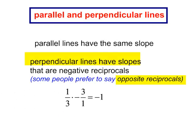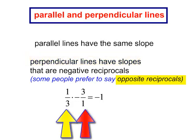If the slope of one line is one-third, the slope of another line is negative 3 over 1. These are opposite reciprocals, and notice, if I multiply them together, I will get negative 1.